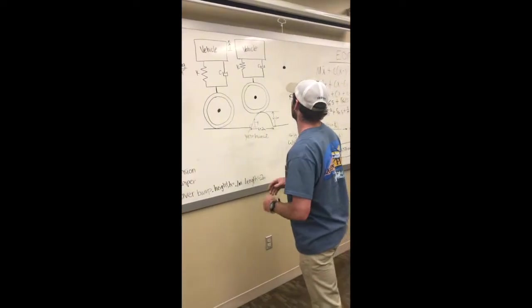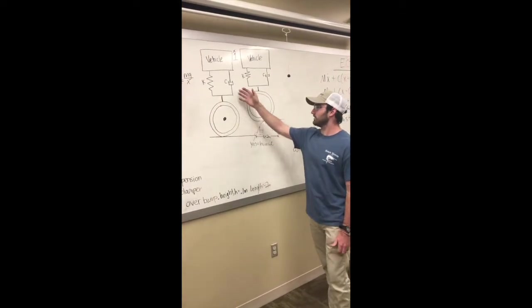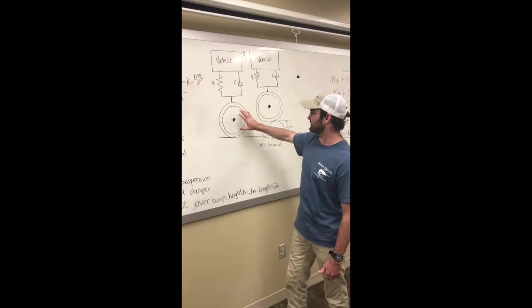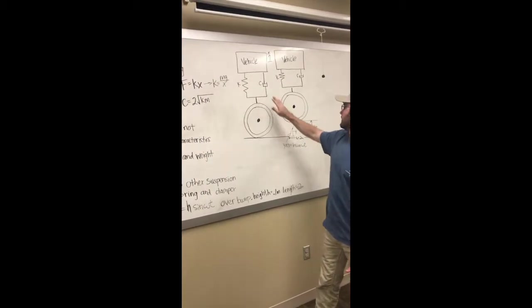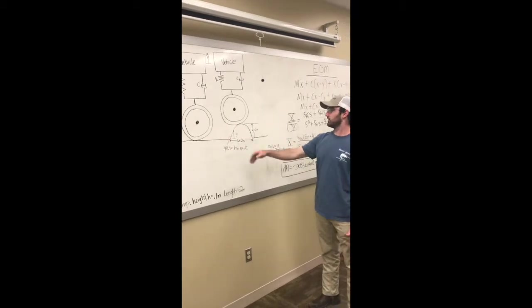In the picture here, you can see before the speed bump, the car is just sitting on the tire, and we have our spring and damper here. As we come forward, it starts going over the speed bump.